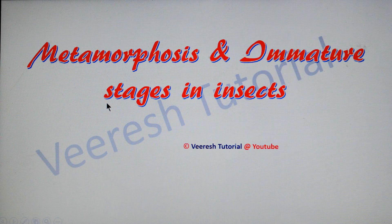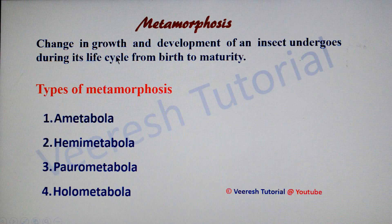Hello friends, in this video I am going to tell you about metamorphosis and immature stages in insects. Metamorphosis is nothing but change in growth and development that an insect undergoes during its life cycle from birth to maturity. Mainly there are four types of metamorphosis you can see in insects.